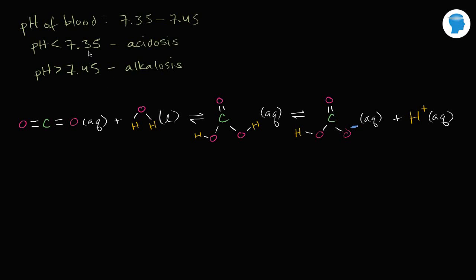And so you might say, wow, this feels like a fairly narrow range. How does our body put up with acidic things, acidic molecules entering our blood, or basic molecules entering our blood? How can it handle that while keeping our pH in this range right over here?